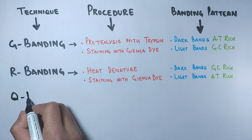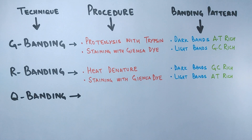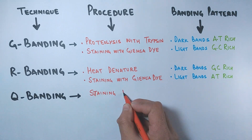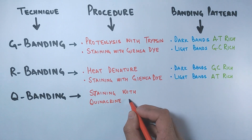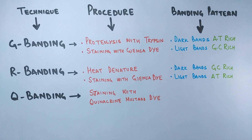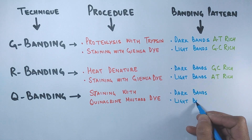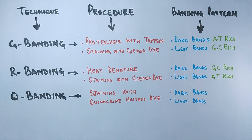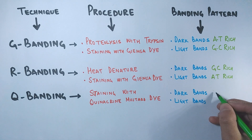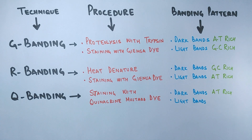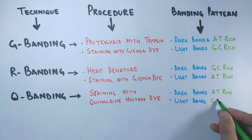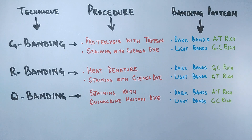Then we have Q-banding, where chromosomes are stained with quinacrine dye — that is why it is called Q-banding. We get the same results as in Giemsa banding: dark bands are AT-rich regions while the light bands are GC-rich regions.